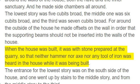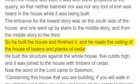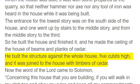When the house was built, it was with stone prepared at the quarry, so that neither hammer nor axe nor any tool of iron was heard in the house while it was being built. The entrance for the lowest story was on the south side of the house, and one went up by stairs to the middle story, and from the middle story to the third. So he built the house and finished it, and he made the ceiling of the house of beams and planks of cedar. He built the structure against the whole house, 5 cubits high, and it was joined to the house with timbers of cedar.